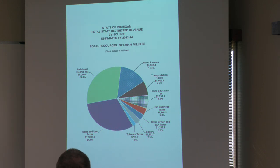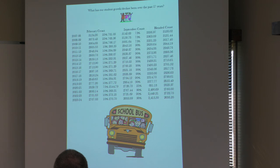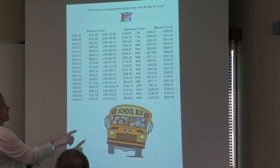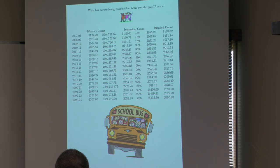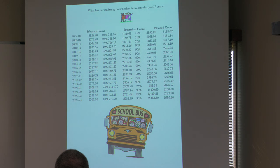We also have student growth data over the last 17 years. The February count is current year at 10%, and the September count is 90%; they blend those to get the blended count. Looking at the blended count from 2007-08, we've lost quite a few pupils all the way down to 23-24. We've had some upticks, but not enough to keep up with where we were 17 years ago.